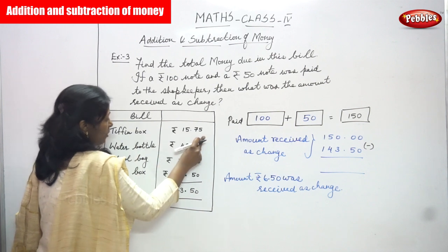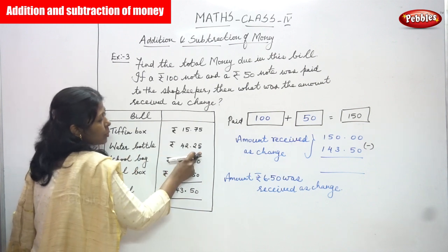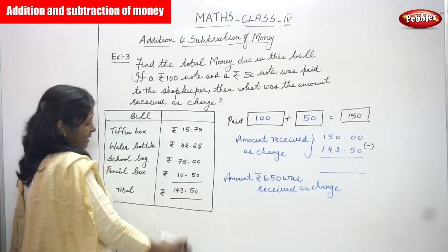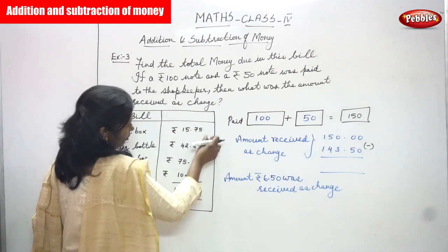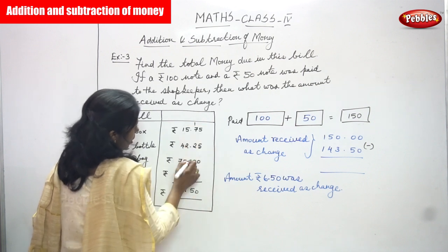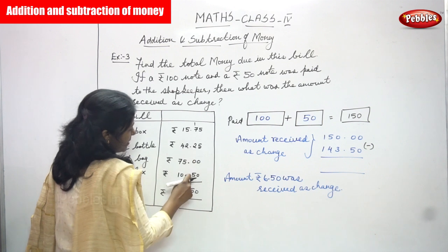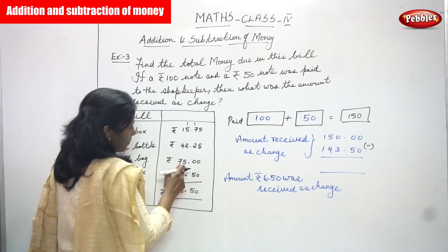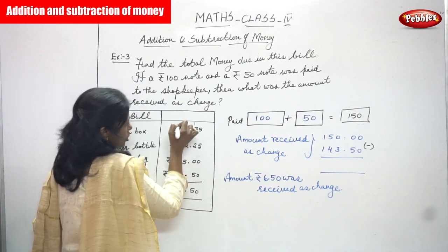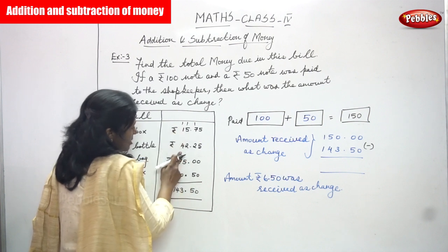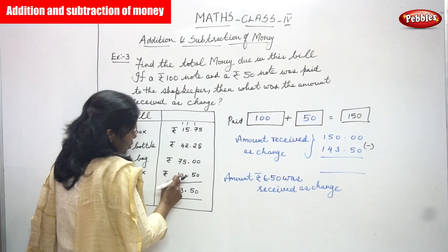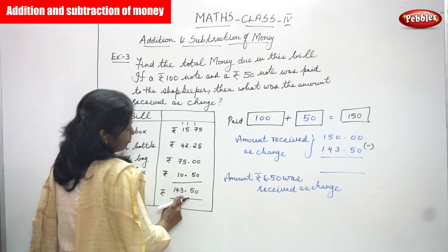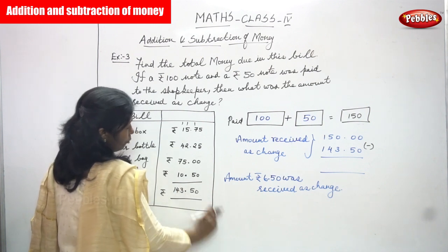The amounts are: pencil box rupees 15.75, water bottle rupees 42.25, school bag rupees 75, and pencil box rupees 10.50. You have to add everything together. 5 plus 5 is 10, write 0 carry 1. 7 plus 1 is 8, 8 plus 2 is 10, 10 plus 5 is 15, write 5 carry 1. Then 5 plus 1 is 6, 6 plus 2 is 8, 8 plus 5 is 13, write 3 carry 1. Then 1 plus 1 is 2, 2 plus 4 is 6, 6 plus 7 is 13, 13 plus 1 is 14. The total bill amount is rupees 143.50 paise.